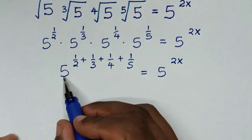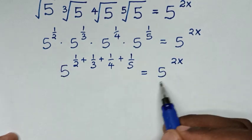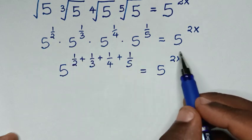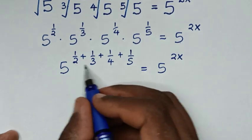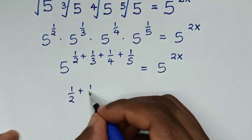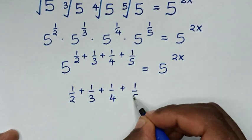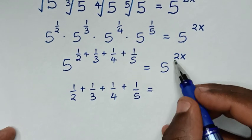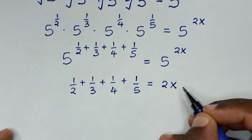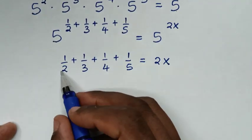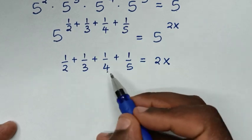On this side we have base 5, and on this side we also have base 5. Because the bases are the same, we compare the powers. So: 1/2 plus 1/3 plus 1/4 plus 1/5 equals 2x.